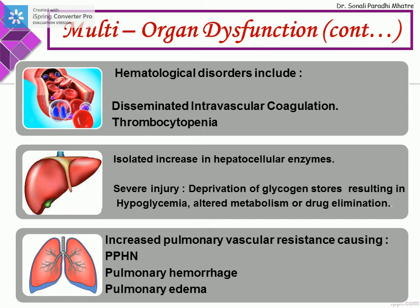In the pulmonary system, increased pulmonary vascular resistance can lead to PPHN, pulmonary hemorrhage, or pulmonary edema. This will be a very critical stage, and immediate respiratory assessment as well as support is needed.